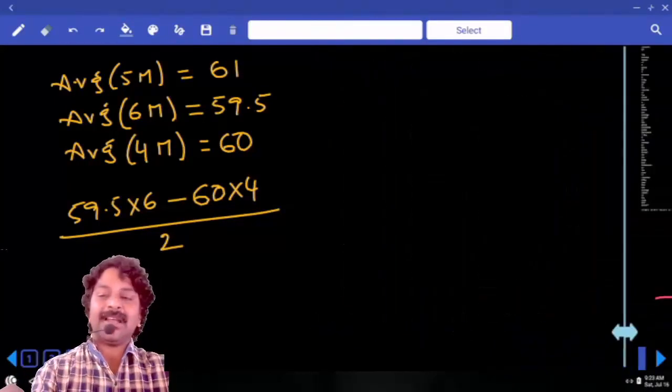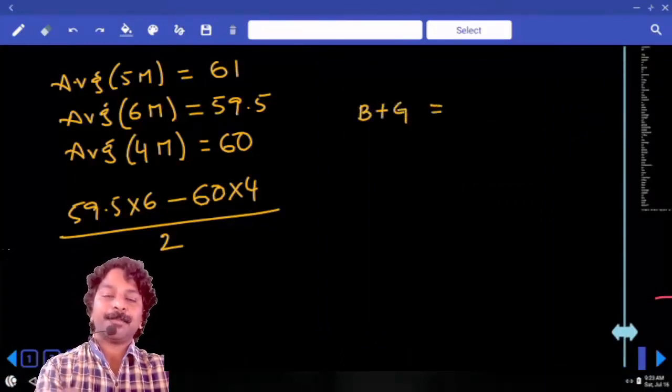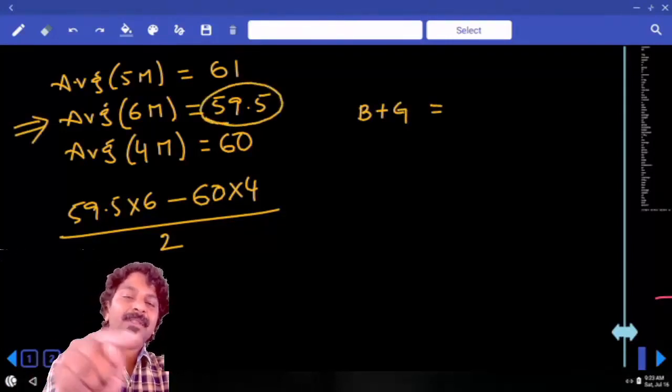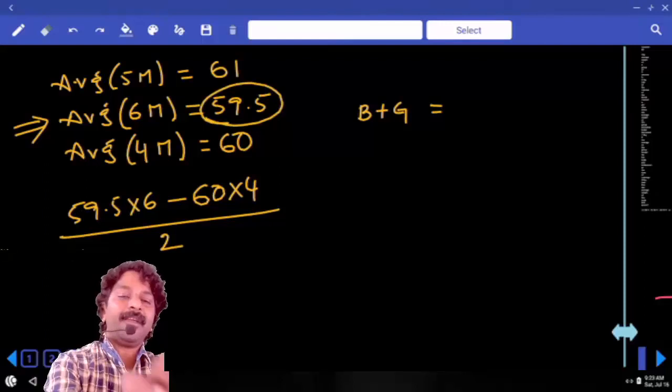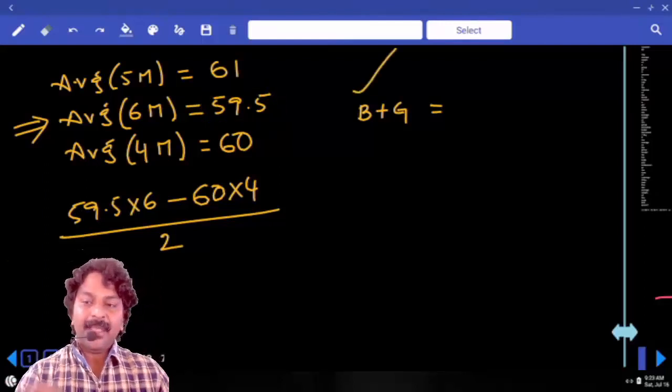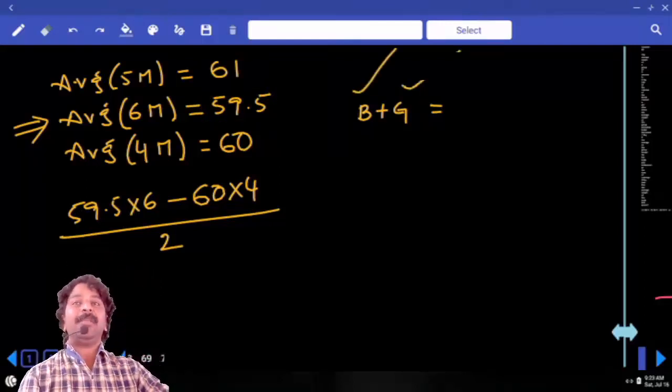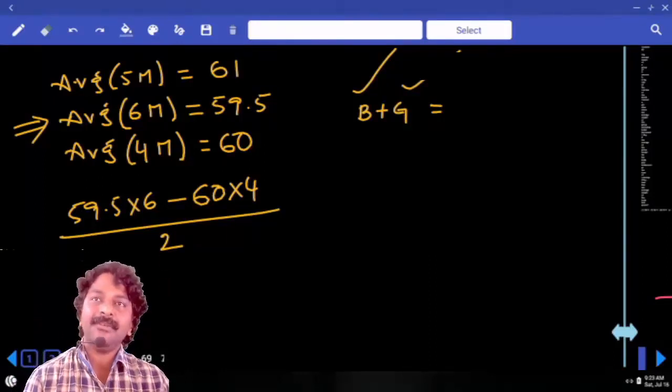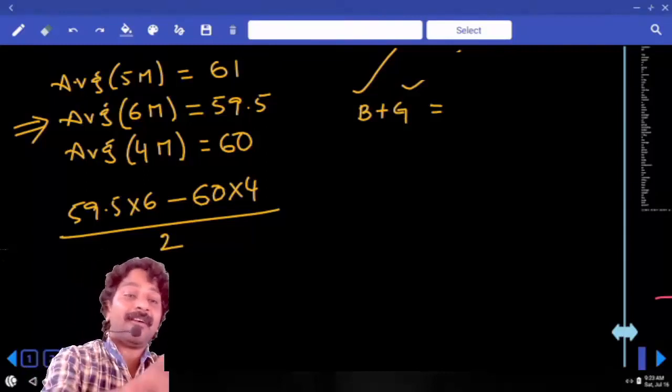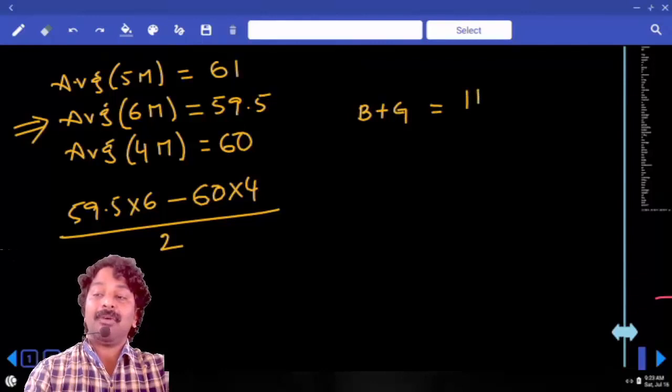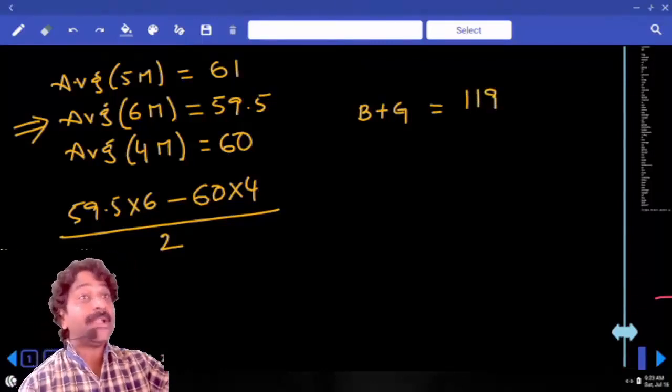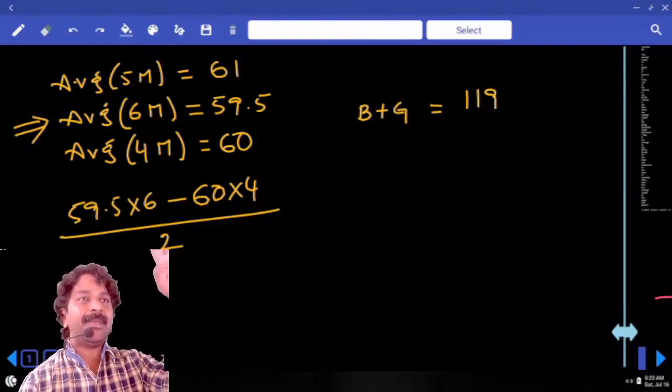Now I will take the equality concept. We are excluding bride and groom. They are included in these 6 members whose average is 59.5. If bride's weight is 59.5 and groom's weight is also 59.5, if we exclude these 2 people, average will be same as before. 59.5 plus 59.5, that is equal to 119. If the sum of their weights is 119, when you exclude them, average will be same as before.